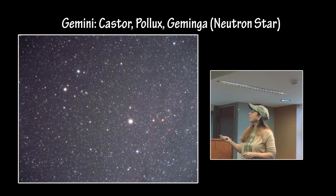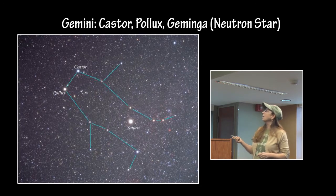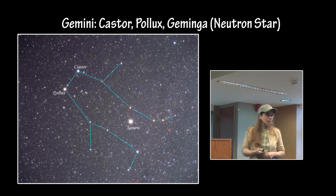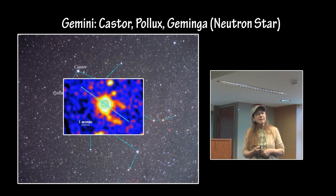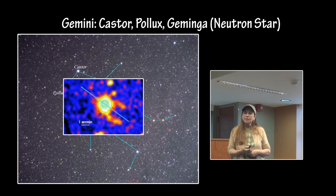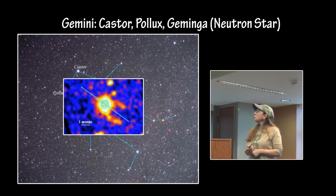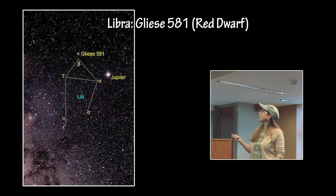Castor, and also in this constellation is Geminga, which is a neutron star that happened to be the very first unidentified gamma ray source, which was then resolved into being a neutron star.